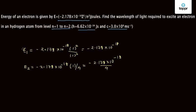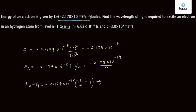The electron is undergoing a transition from state 1 to state 2, so the net change in energy, ΔE = E₂ − E₁ = −2.178 × 10⁻¹⁸ × (1/4 − 1). This simplifies to −2.178 × 10⁻¹⁸ × (−3/4), giving ΔE = +3/4 × 2.178 × 10⁻¹⁸ joules.